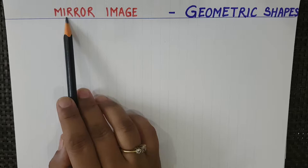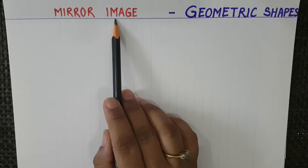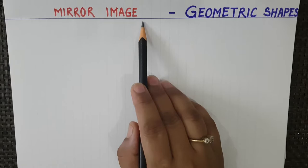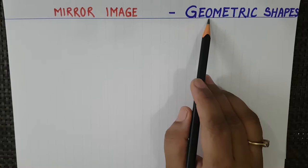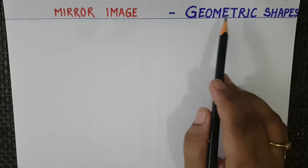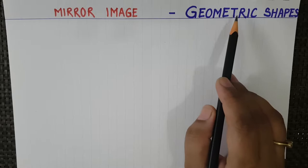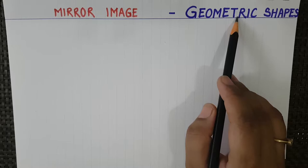Let's read the spelling: M-I-R-R-O-R, mirror. I-M-A-G-E, image. Mirror image — that is the image you see in a mirror. Today we will study mirror image of geometric shapes. G-E-O-M-E-T-R-I-C, geometric. S-H-A-P-E-S, shapes.